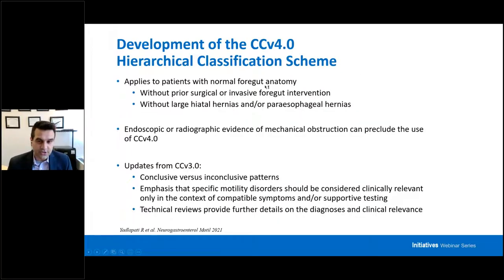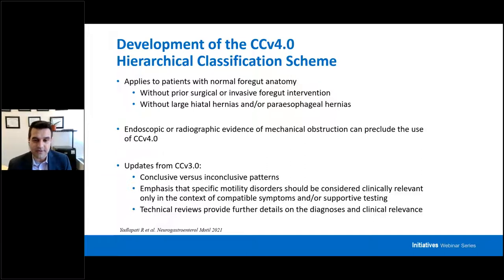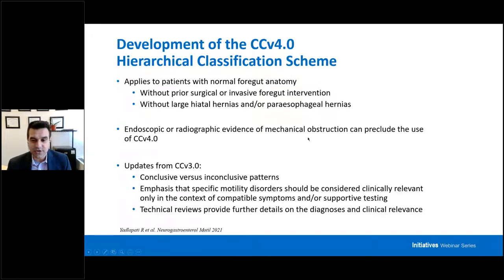A few reminders with 4.0: it applies to patients with normal foregut anatomy. So when you use normal versus abnormal numbers, you have to keep that in mind. It doesn't mean you can't do manometry on a patient with prior surgery across the esophagogastric junction, whether reflux surgery, bariatric surgery, et cetera, but normal values were meant for patients with normal foregut anatomy. The same goes for large hiatal hernias. If you have evidence of mechanical obstruction, that would make you wary of even trying to put a catheter across the esophagogastric junction.